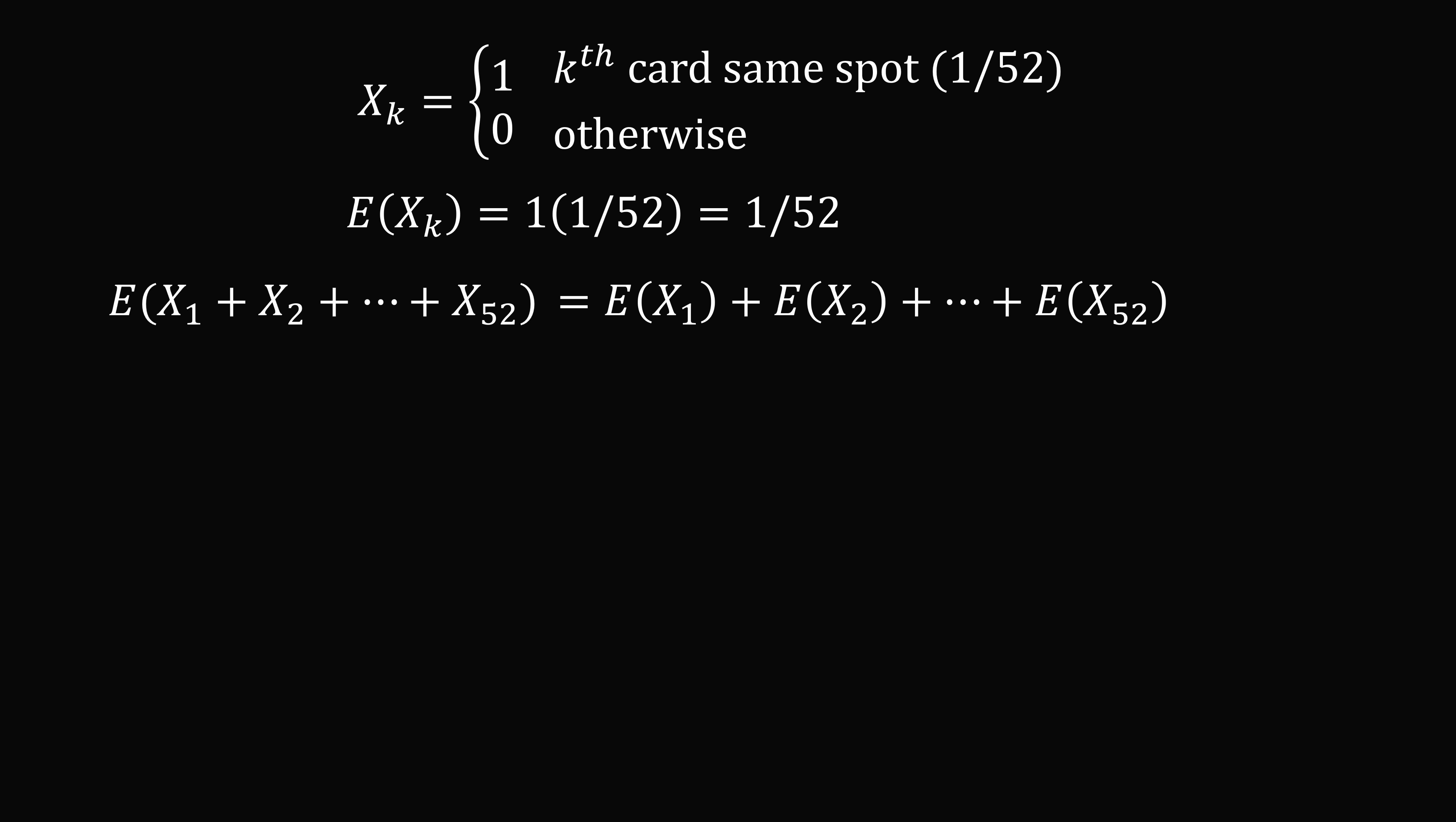But each of these expectations is equal to 1 over 52. There are 52 terms that are equal to 1 over 52, which means this expectation is equal to 1. Therefore, in a random shuffle, you can expect one card to be in the same position.